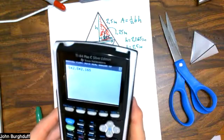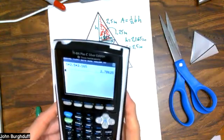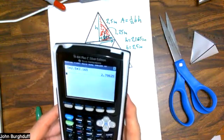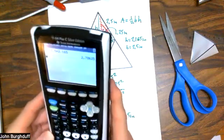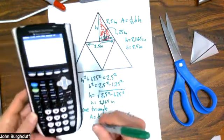And hopefully you can see that. There, perfect. Hit enter, and we get 2.70625. But again, let's round that off to three decimal places. And to three decimal places, that'd be 2.706.